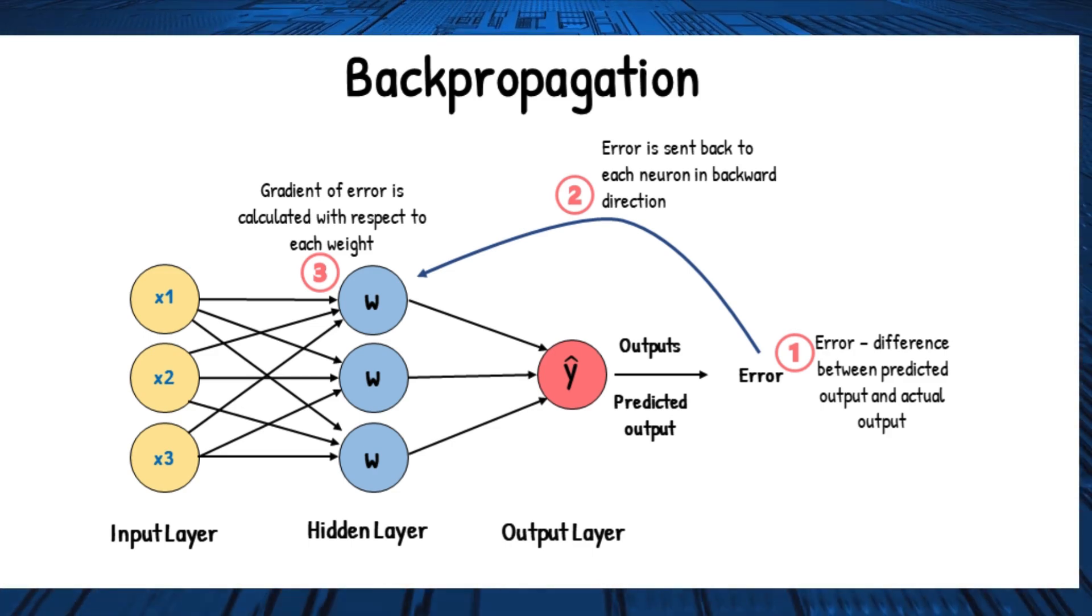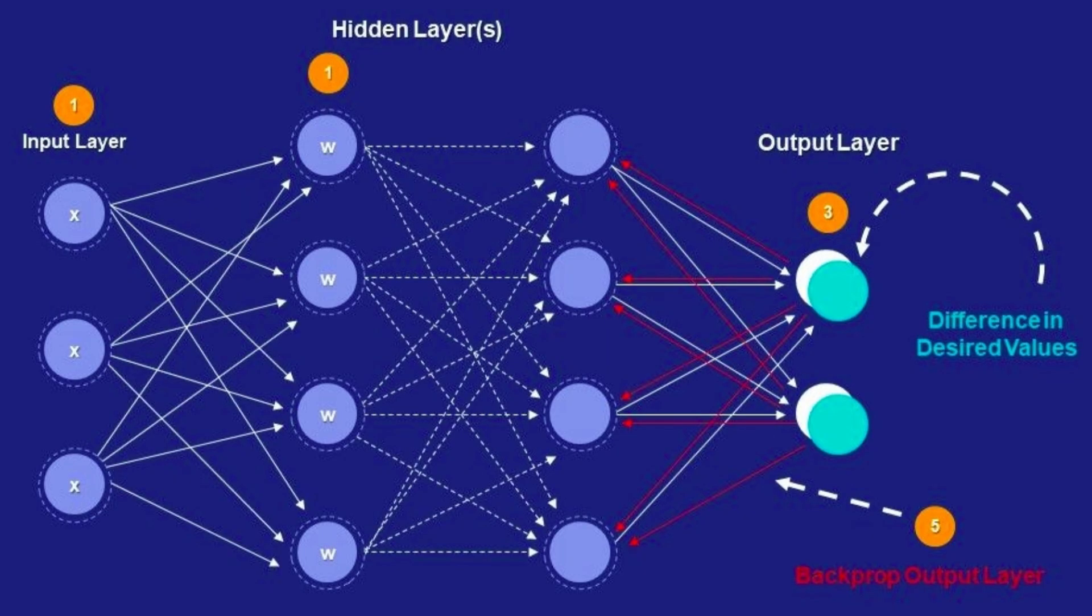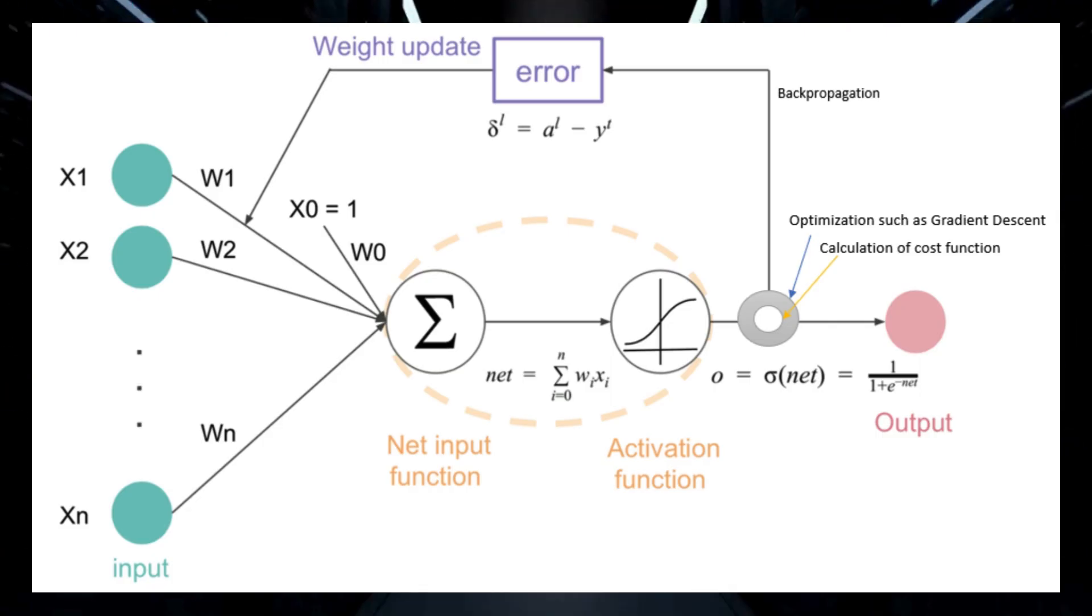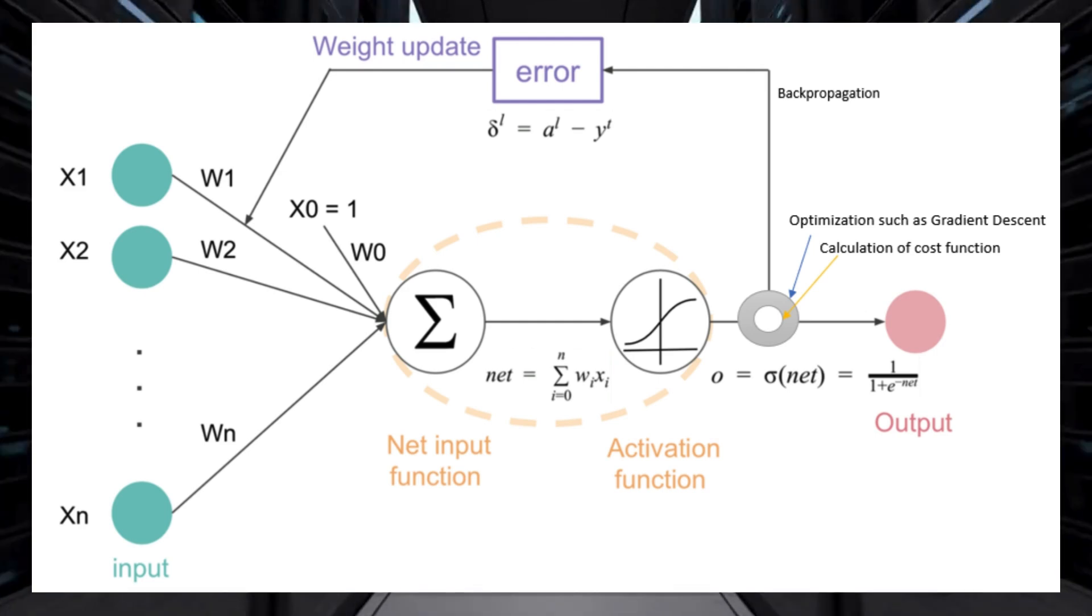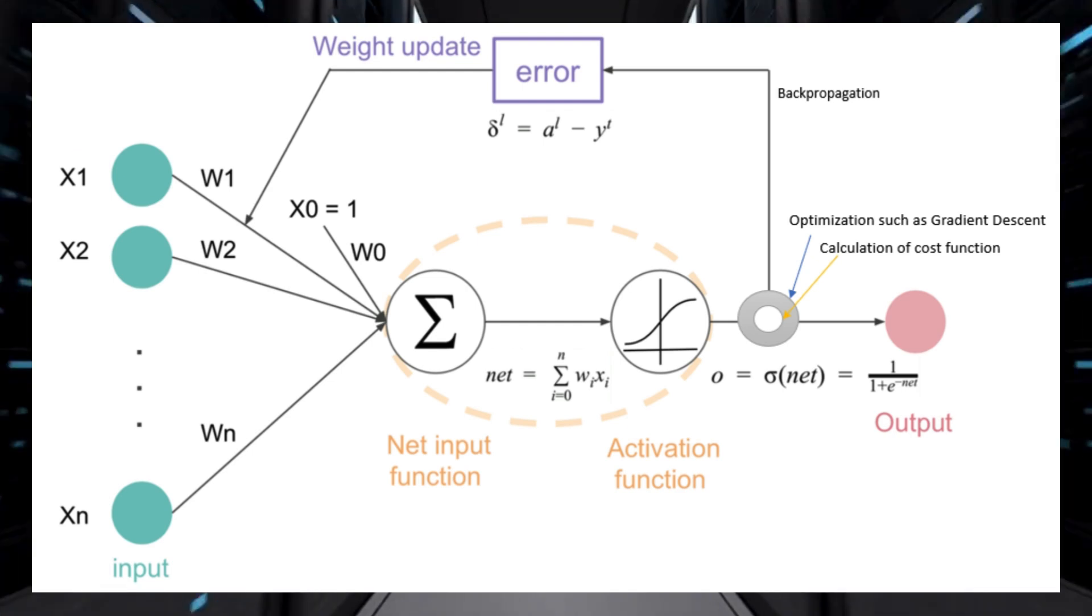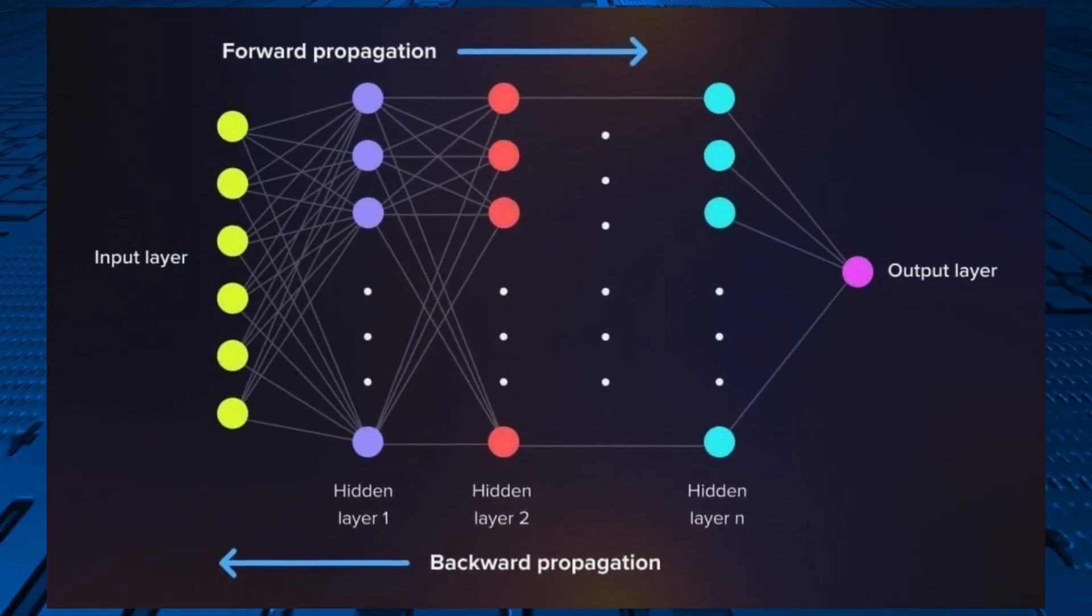Backpropagation is a method used to train neural networks by adjusting the weights to minimize the error between predicted and actual outputs. It involves a forward pass to compute predictions and a backward pass to update weights based on the error gradients. This iterative process helps the network learn and improve its accuracy.